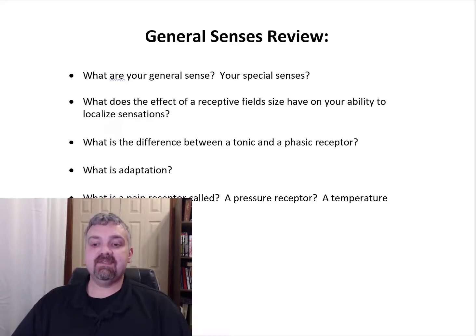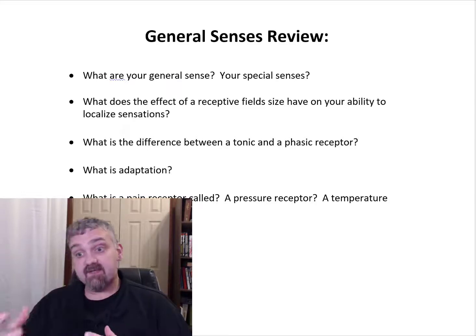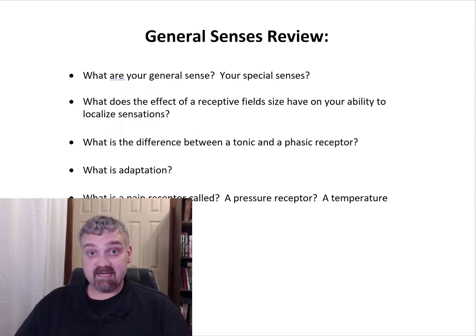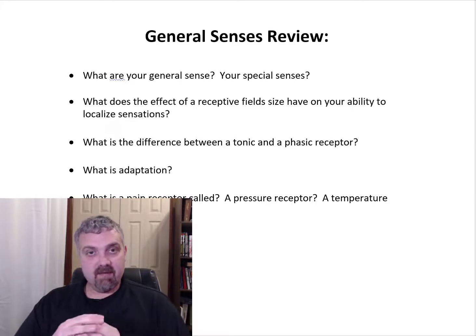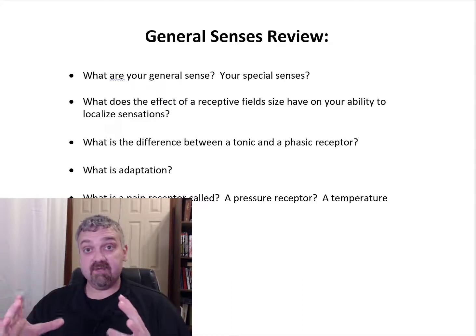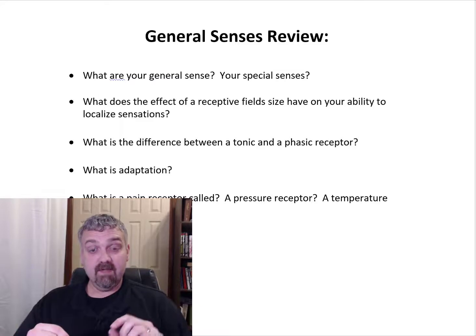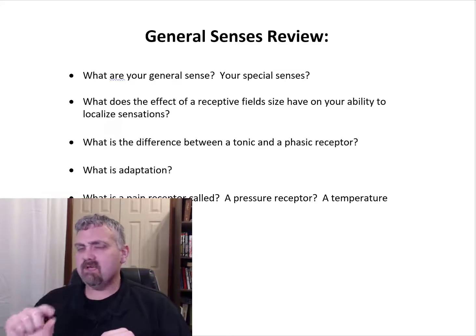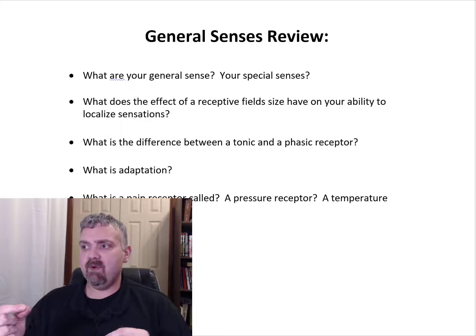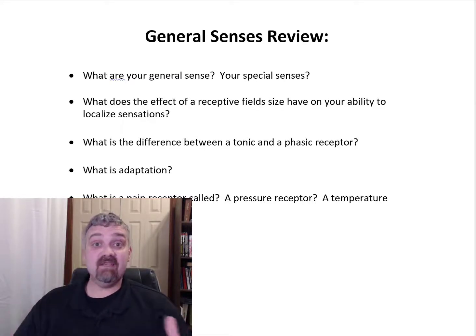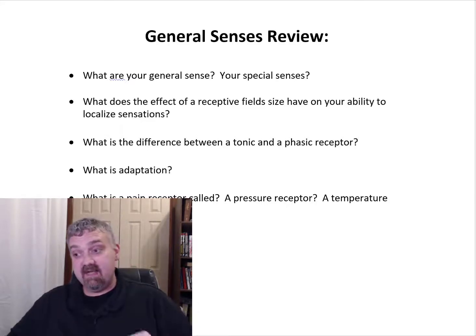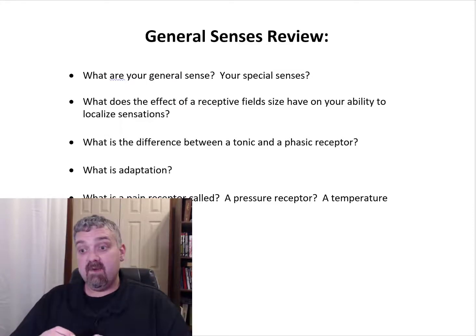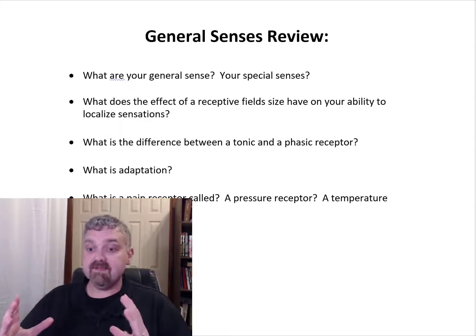What does the effect of a receptive field size have on your ability to localize sensation? Every sensory receptor we have is monitoring a specific area for a specific sensation. If a receptor has a very small sensory receptive field, it's only monitoring a very small location. If it has a really large receptive field, it's monitoring a large one. The smaller the receptive field, the more specific you can be about where the sensation is coming from. If you touch my fingertips or my lips, I'll be able to much more accurately tell you exactly where I'm being touched than I would on the back of my thighs or the small of my back. The receptive fields there are larger.